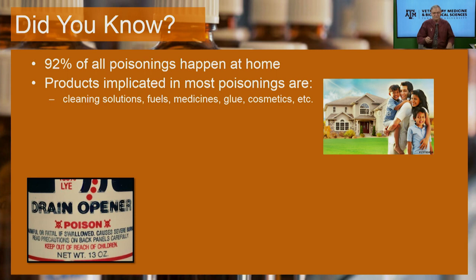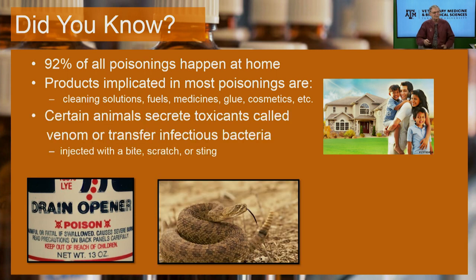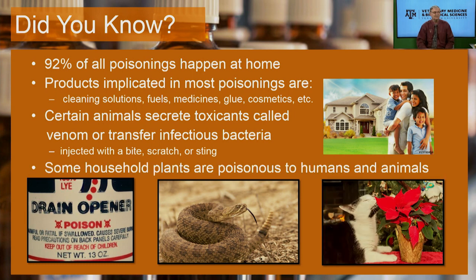Certain animals secrete toxicants like venom — snake venom, we don't want it. Others transfer infectious bacteria. Have you ever been scratched by a cat? It didn't heal as quickly as it should, because cats inoculate you with infectious bacteria under their nails. Also, plants — here we see poinsettias. We love them for Christmas time, but they're poisonous plants and another source of toxicants.